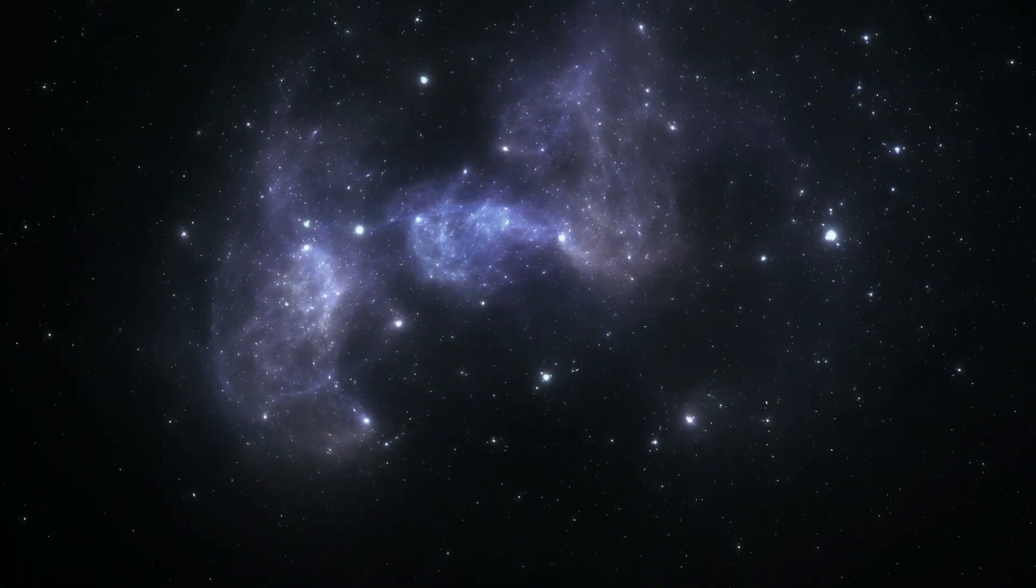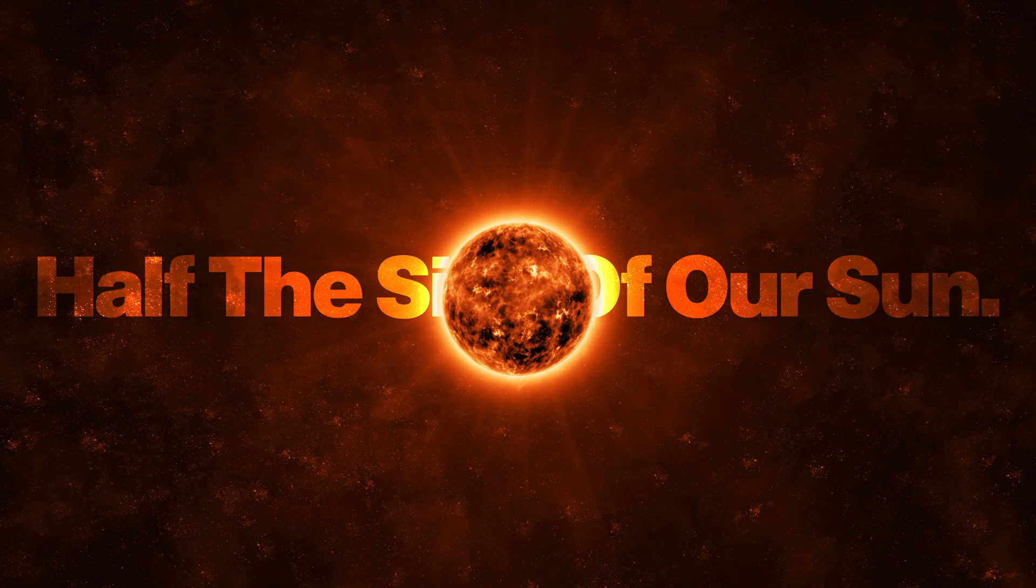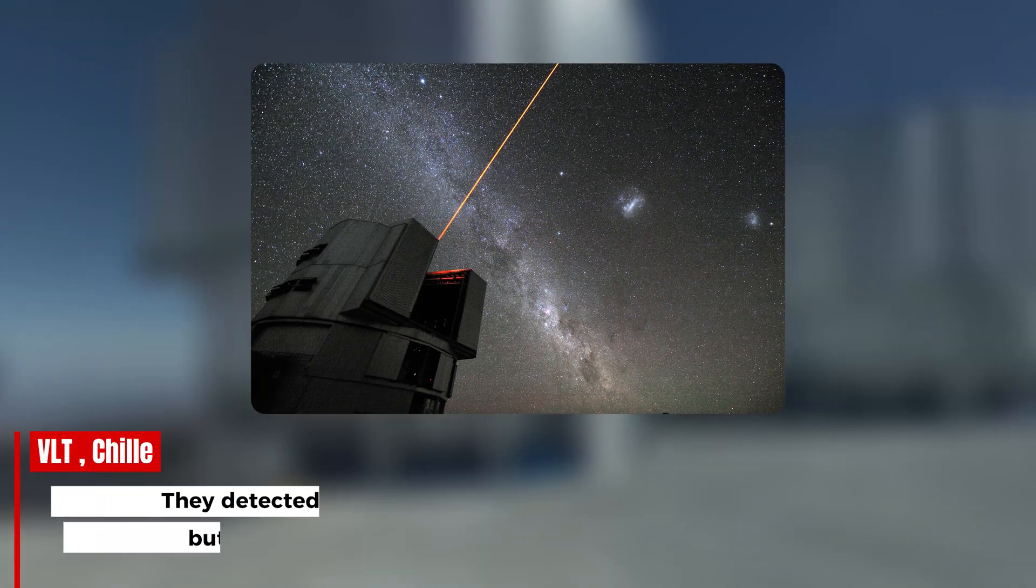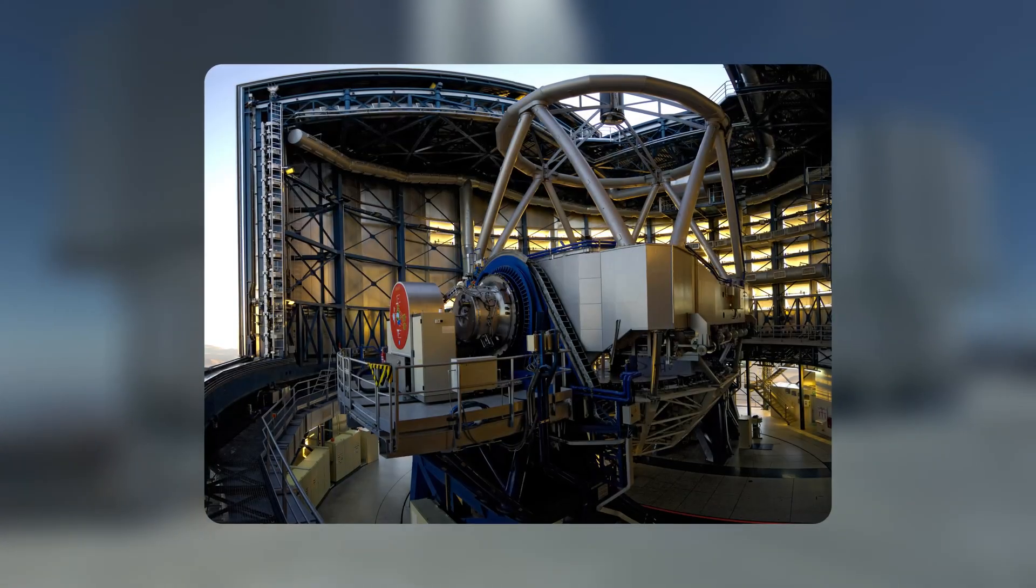This massive CO2 cloud now stretches 186,000 miles in radius. That's almost half the size of our sun. But the real game changer came from the very large telescope in Chile. They detected pure nickel metal in Atlas's coma, but here's the kicker. No iron whatsoever.